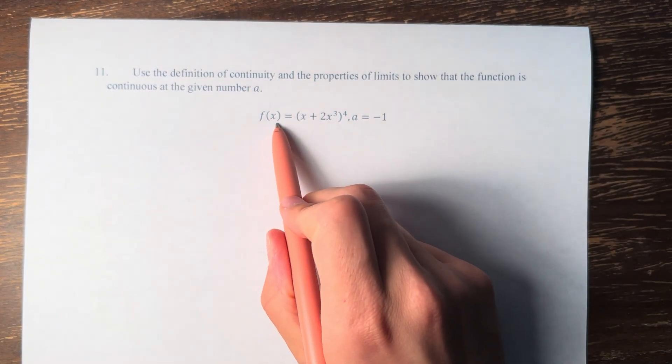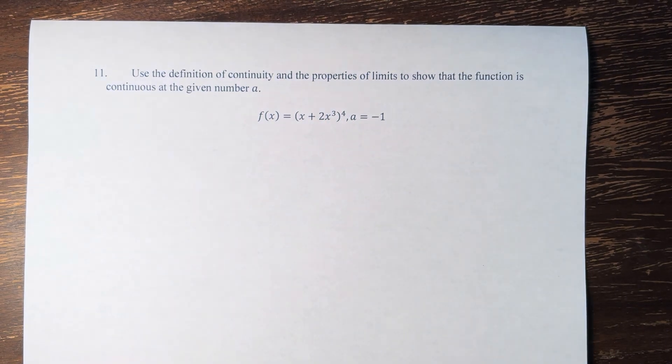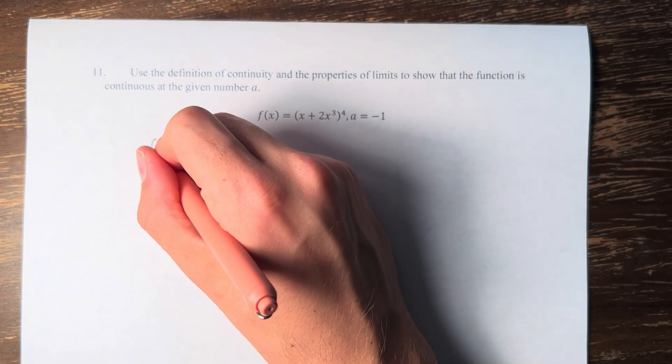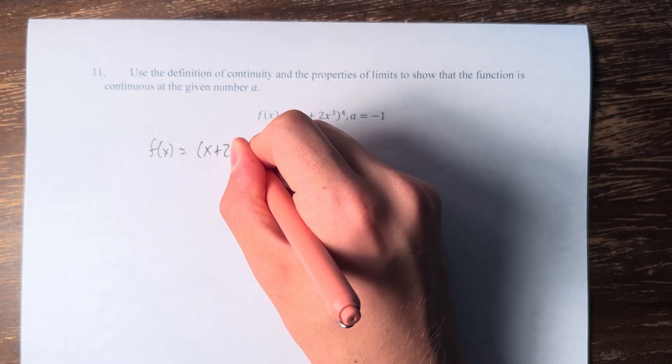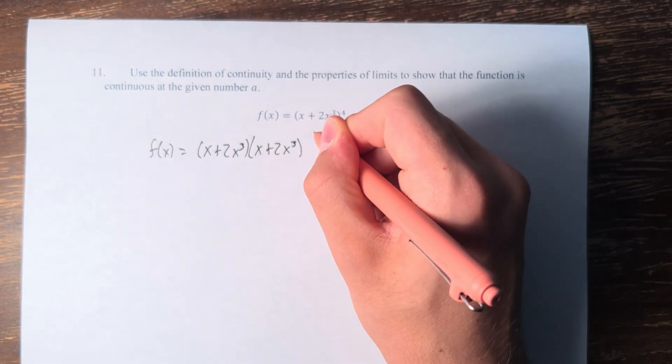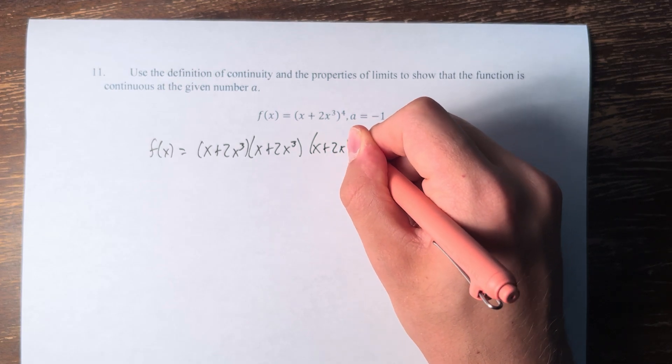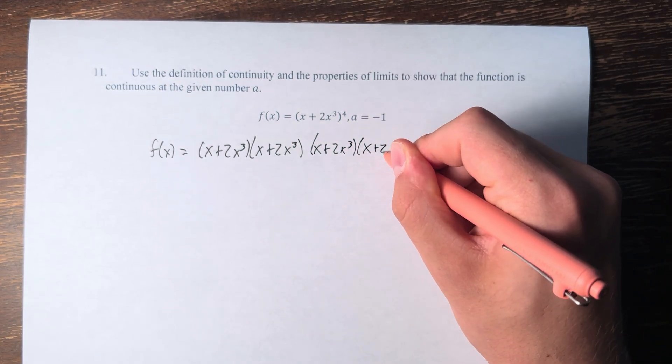So we have the function f(x) is equal to x plus 2x cubed to the fourth power. So this is f(x) equals x plus 2x cubed times x plus 2x cubed times x plus 2x cubed times x plus 2x cubed.